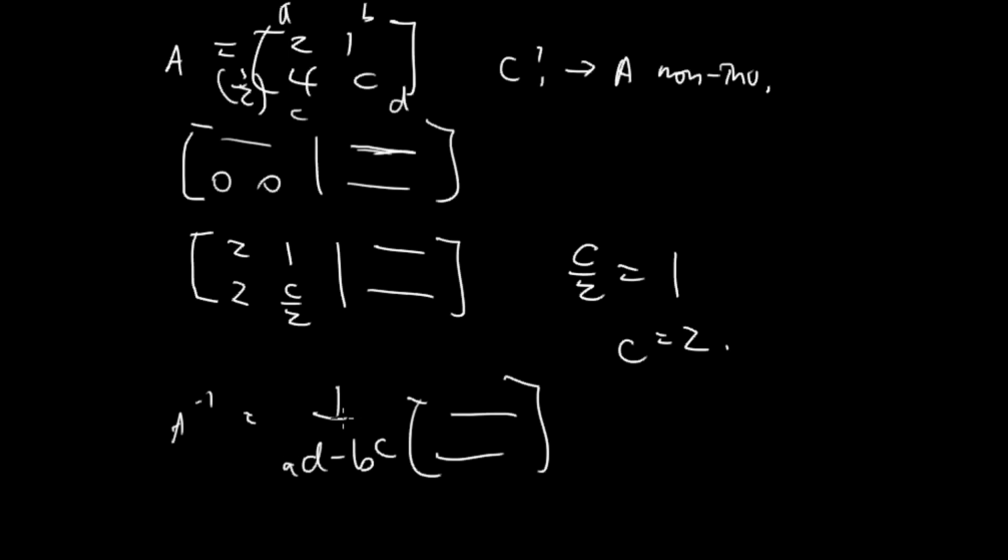If AD minus BC turns out to be zero, then we can't divide by zero. And that's also an indication that a matrix is non-invertible.